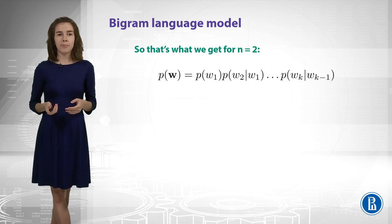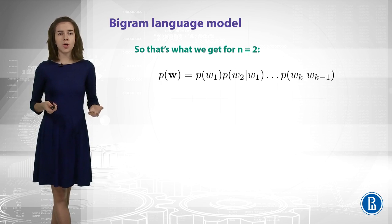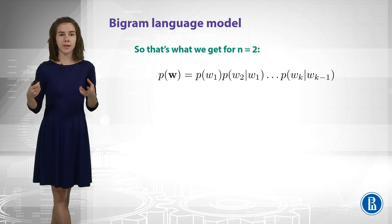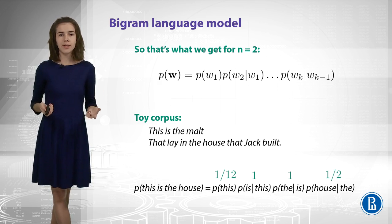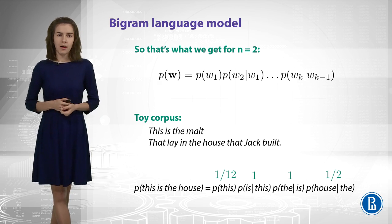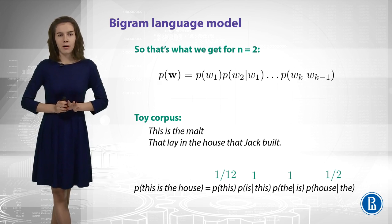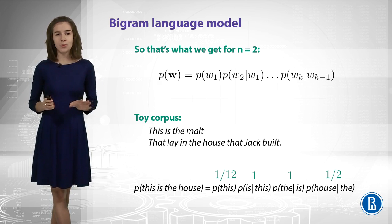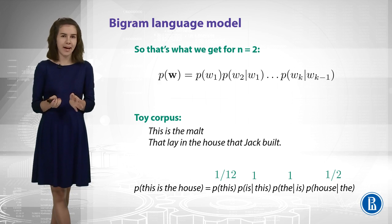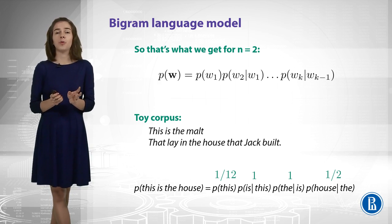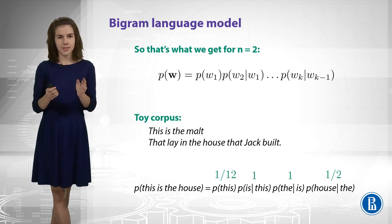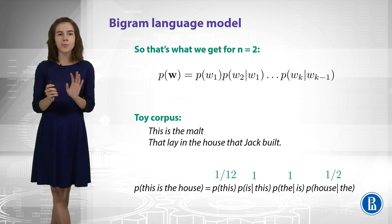So, here, what happens for n equal 2, for bigram model? You can recognize that we already know how to estimate all those small probabilities in the right-hand side, which means we can solve our task. So, for a toy corpus again, we can estimate the probabilities, and that's what we get. Is it clear for now? I hope it is. But I want you to think about if everything is nice here. Are we done? Well, I see at least two problems here. And I'm gonna describe both of them, and we will try to fix them. Actually, it's super easy to fix them.